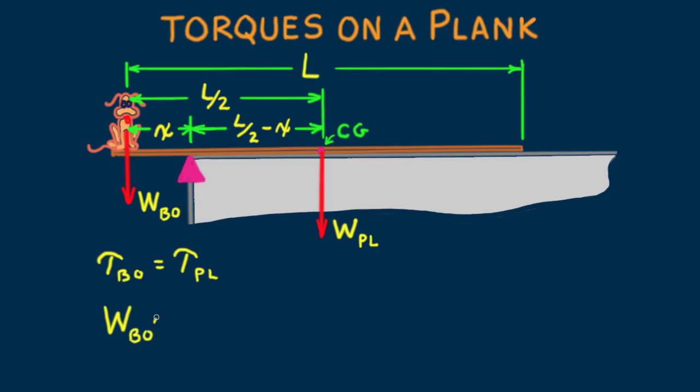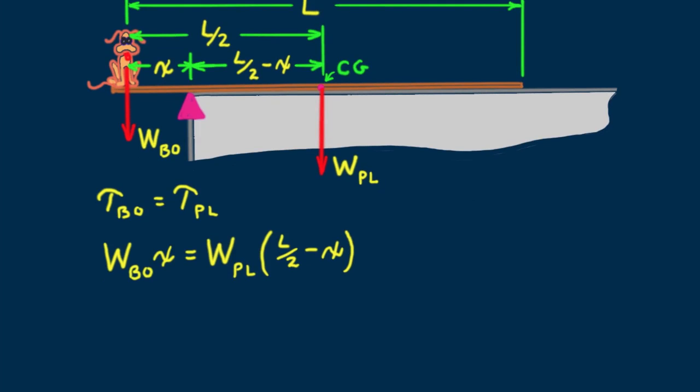Equating torques, the weight of Bo times distance x will equal the weight of the plank at the center of gravity times the distance L over 2 minus x.